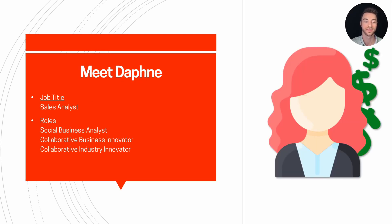Now to the sales team. First, Daphne. She is a sales analyst and has the Social Business Analyst role as well as the collaborative roles. With the Social Business Analyst role she is able to take data and track social media trends as well as general trends to ensure that there is a place for this product in the market.